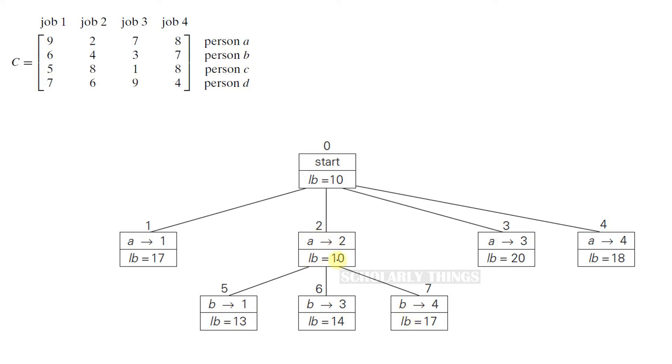Job number 2 was assigned to person A. So now the possible values for person B are job 1, job 3, and job 4. Let's see what are the lower bounds for it. If you assign job 1 to person B, the lower bound will be 13. If you assign job 3 to person B, the lower bound will be 14. If you assign job 4 to person B, the lower bound will be 17.